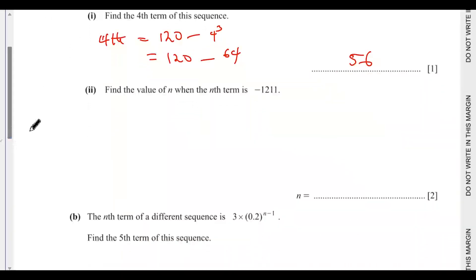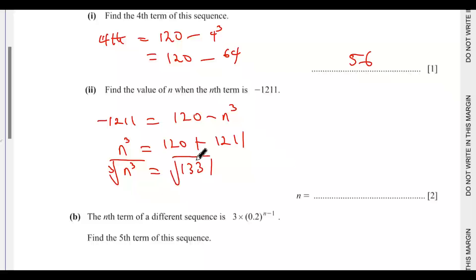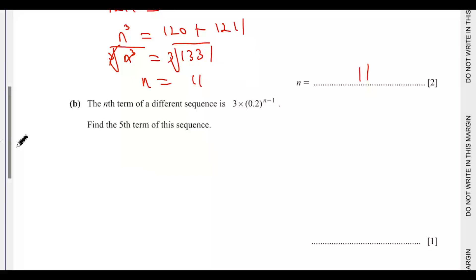Part 2: find the value of n when the nth term is minus 1211. So we set minus 1211 equals 120 minus n cubed. Rearranging, bringing n to the left-hand side, we get n cubed equals 120 plus 1211, which is 1331. Taking cube roots of both sides gives n equals 11.